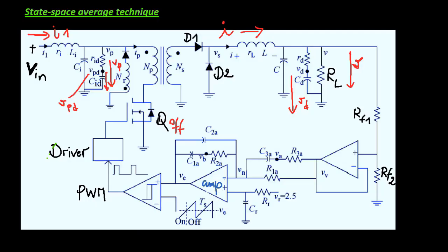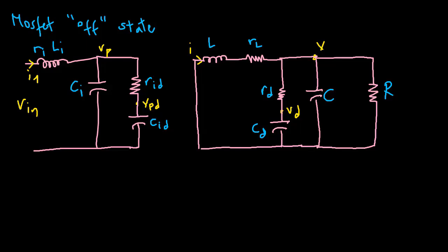When the switch is turned off, the freewheeling diode D2 commences conduction. If an ideal case is assumed, the diode forward voltage may be considered zero. With this assumption, a new set of equations can be written for this switch-off configuration.